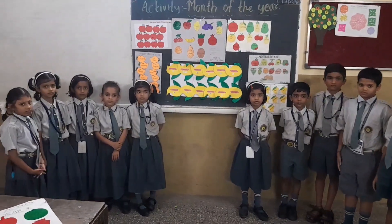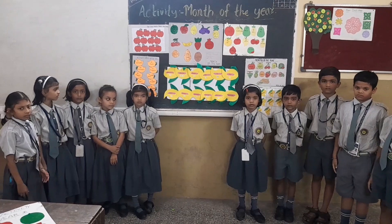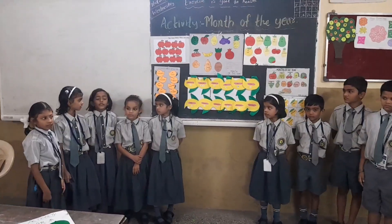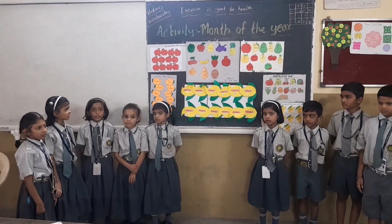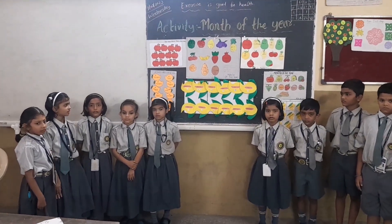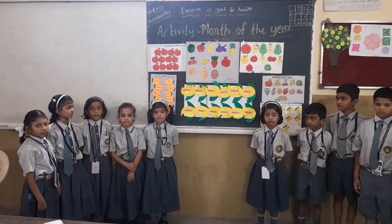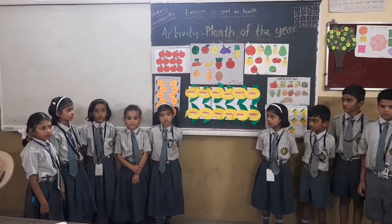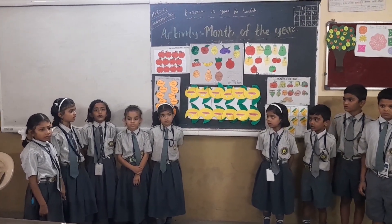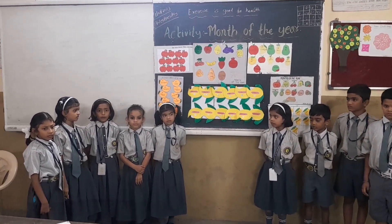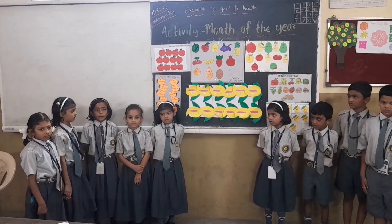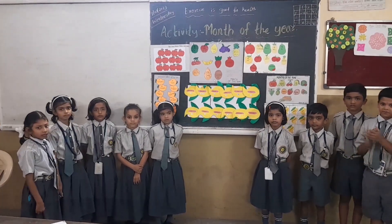Which month has 31 days? January, March, May, July, August, October, and December — 31 days.